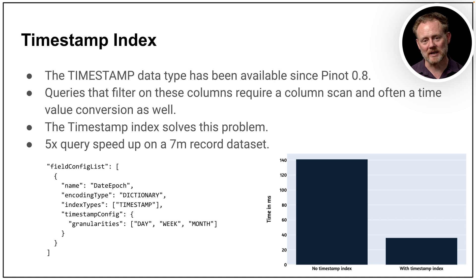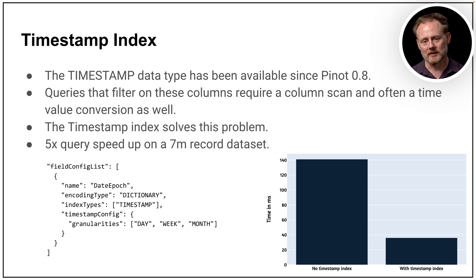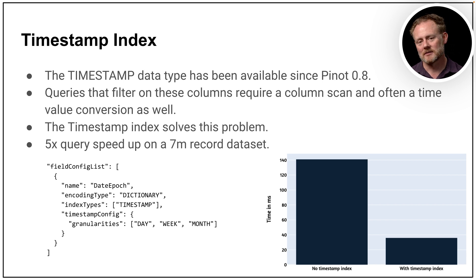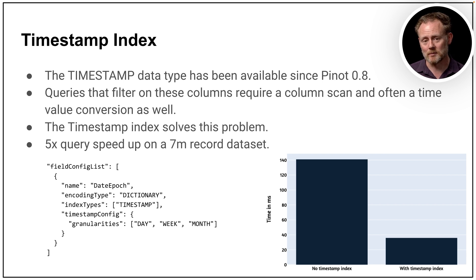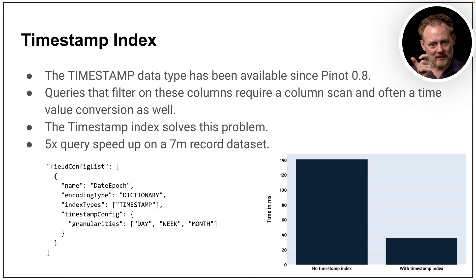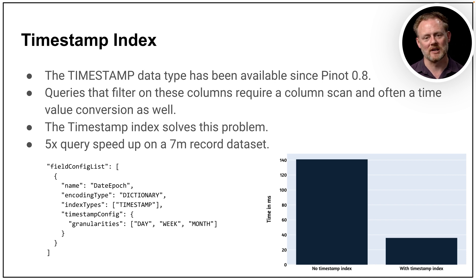The timestamp index. This is really cool. Timestamp has been a data type since 0.8, but now we've got a super effective way to build an index on a timestamp field. It used to be that filtering by timestamp would probably cause a full column scan, and you'd have to convert the native timestamp into some other time format — pretty expensive. Now with the timestamp index, it creates a hidden column that bins your timestamps into the grain you specify, such as day, minute, or second, and effectively creates a range index on that column. You get very fast time lookups according to the grain you specify.